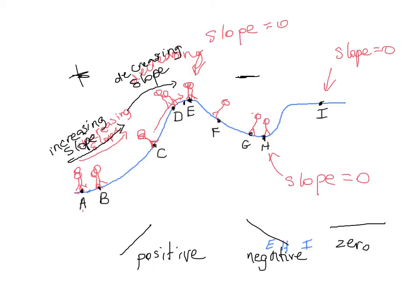As the guy goes from F down to H, the slope was very negative at F — say, negative two — and then approached zero, perhaps negative one-half at G, and reaching zero at H. So the slope is actually increasing from F to H. It's a tough concept, but the slope is increasing because it goes from very negative and approaches zero. That's what we mean when we speak about increasing or decreasing slope.